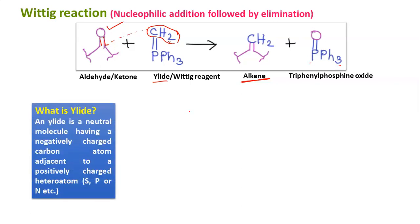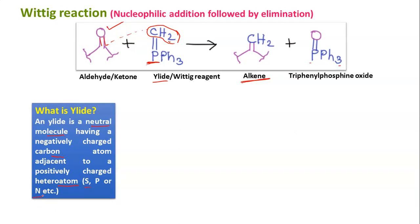Now we need to know what the ylide is. The ylide is basically a neutral molecule. You can write a charge over carbon and phosphorus — in that case we write only one bond between carbon and phosphorus. It carries one positive charge and one negative charge, so ultimately it is neutral, with a negative charge over the carbon atom. The nucleophile used in this reaction is carbanionic in nature: a negatively charged carbon atom adjacent to a positively charged heteroatom. In this scheme we have used phosphorus ylide, but sulfur or nitrogen can also be used.